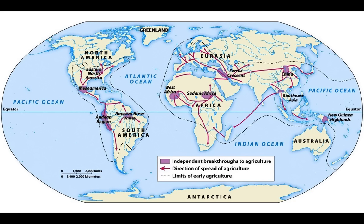Looking again at this map, you are responsible for knowing and being able to give examples of where agriculture developed independently - those purple areas. Probably the one we'll talk about most is the Fertile Crescent. China is also important because it developed independently with less contact with other regions. And remember, there's a very similar map from Key Concept 1.1 that showed people all over the world - people were already there as hunter-foragers when agriculture began to spread.